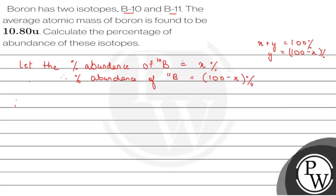So we know that average atomic mass is given by the formula, which is summation of mass of all isotopes into its respective abundance.